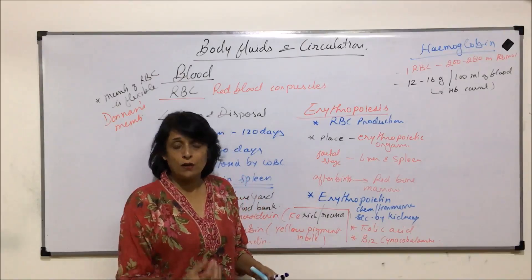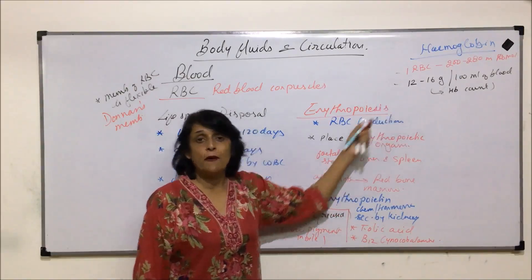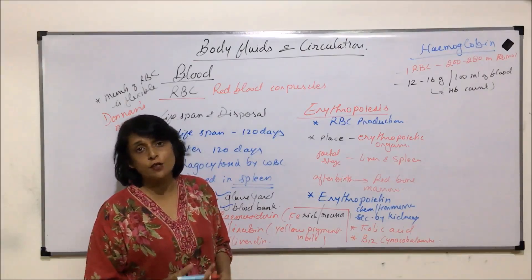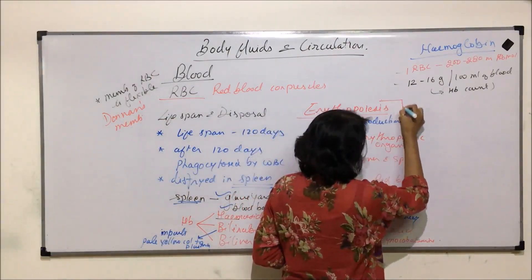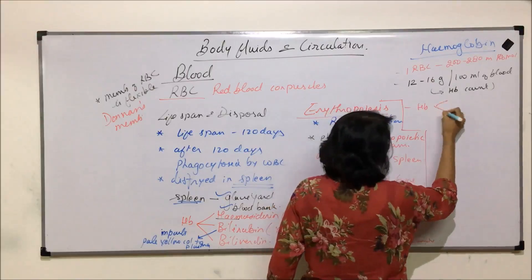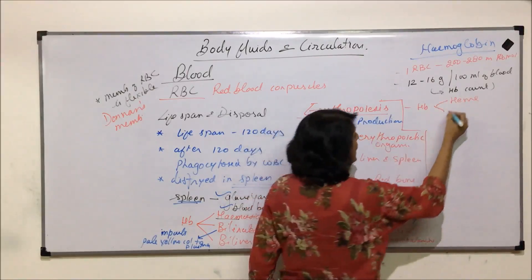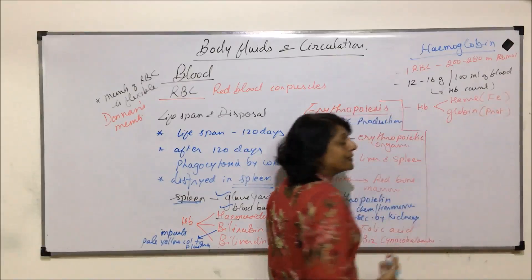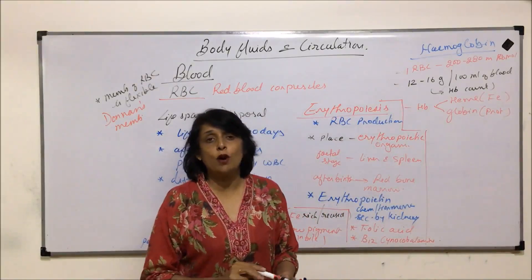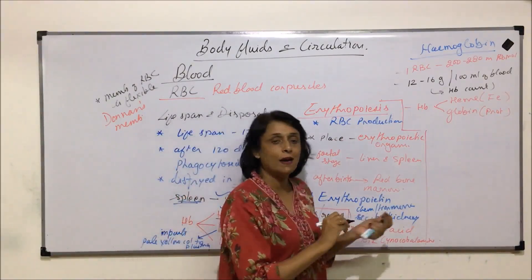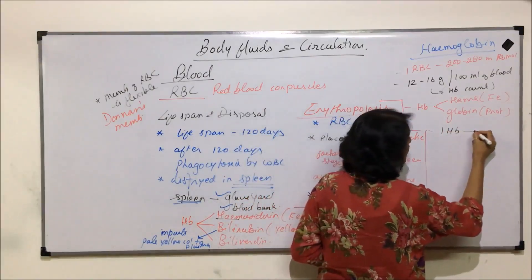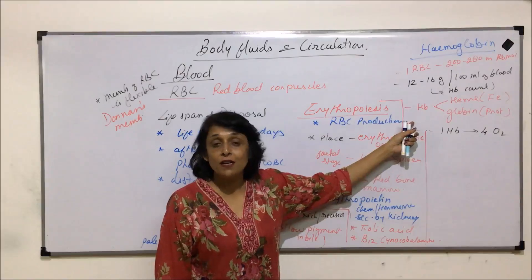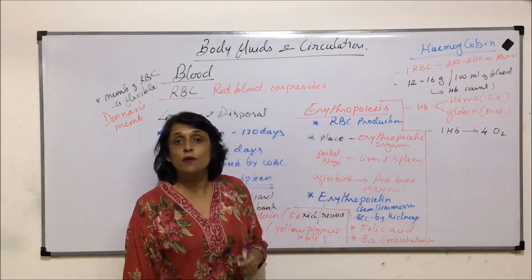The hemoglobin count or mass would decrease because of various conditions — for example, if iron is not available, since iron is one of the constituents of hemoglobin, or if there is protein deficiency. Hemoglobin is made up of two parts: the heme, which is the iron-containing part, and globin, which is the protein part. As discussed in the respiration chapter, one hemoglobin molecule can transport four oxygen molecules and is a respiratory pigment that helps in the transport of respiratory gases.